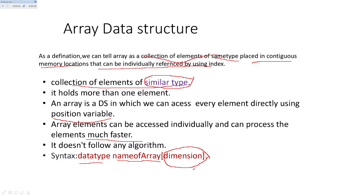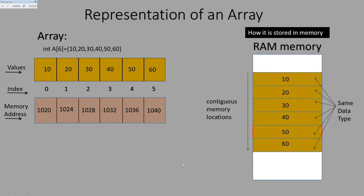Using a variable is better in some cases. Deletion and insertion in arrays is a little bit difficult — that is a disadvantage. Coming to the representation of the array, we use an index and reference variable. This index variable is used to retrieve data directly. The syntax is: first the data type — for example, int — then the name of the array, then a size of 6.